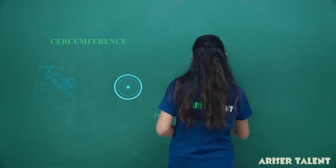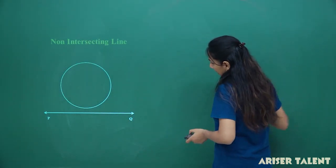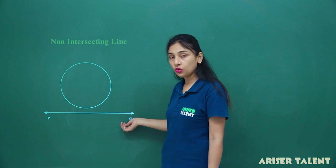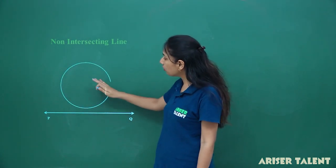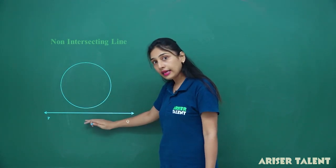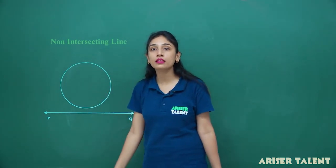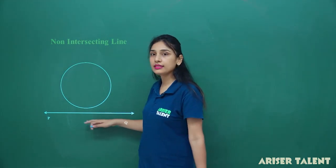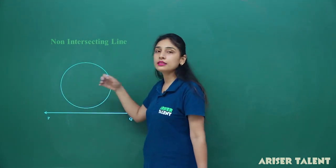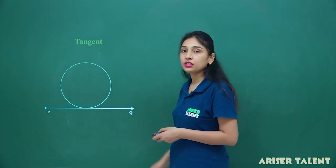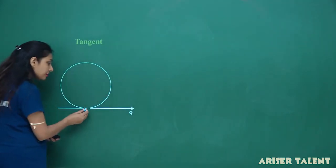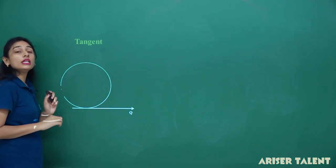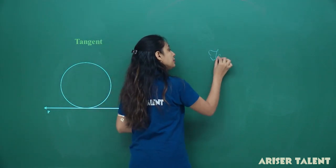Non-intersecting line: I have drawn a line PQ with the circle here. I have drawn this line such that it is not intersecting this circle in any way. So I will call it a non-intersecting line. I am telling you this because of the concept of tangent. If this line just touches one point here on the circumference, then what we call it? We call it a tangent.